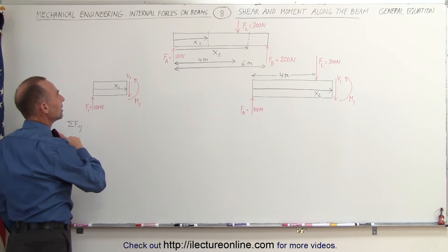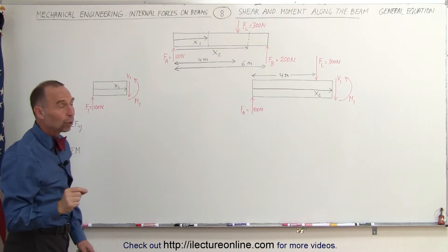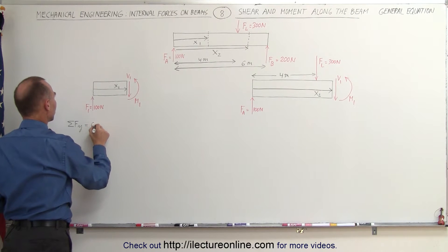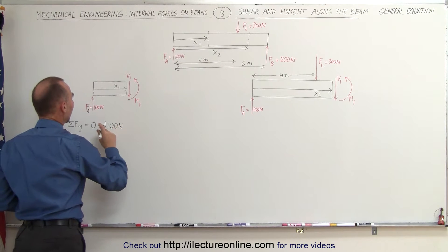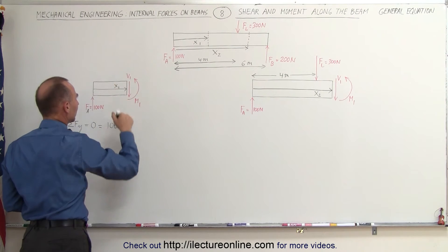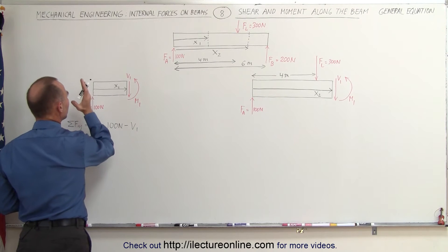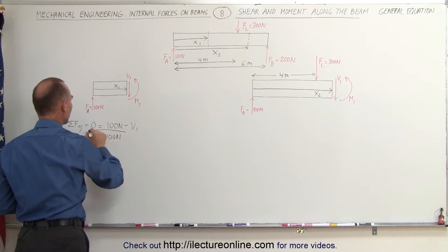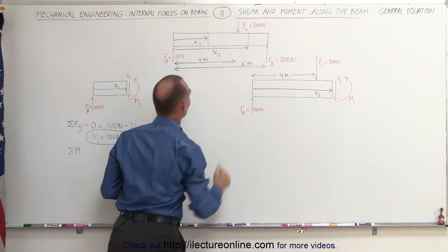Let's find the shear and the moment from the zero point — the left side of the beam — to the four-meter point where the load force acts. Summing all forces in the y-direction for the left section equal to zero: the only upward force is the 100-newton reaction force at A, minus the shear force V1, equals zero. So V1 equals 100 newtons — notice there's no dependency on x. It's 100 newtons all the way from the left end to where the load force acts.